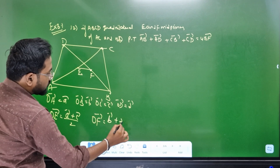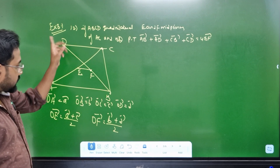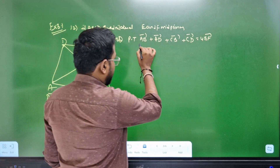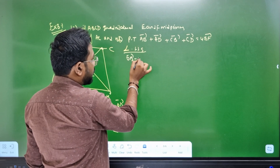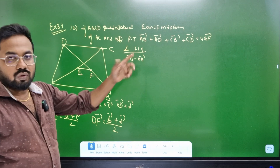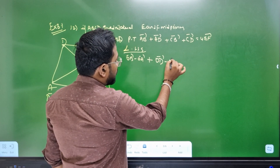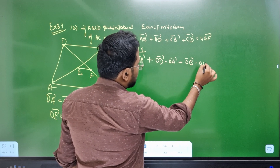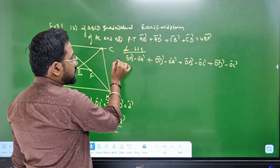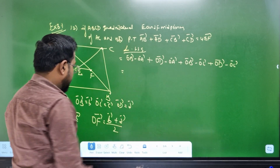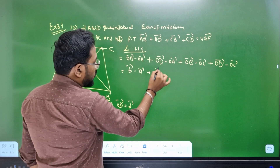OF is equal to small b vector plus small d vector divided by 2. The position vector is converted. Now, AB vector is OB vector minus OA vector. OD minus OA, OD minus OC. Od minus OC plus od and c.